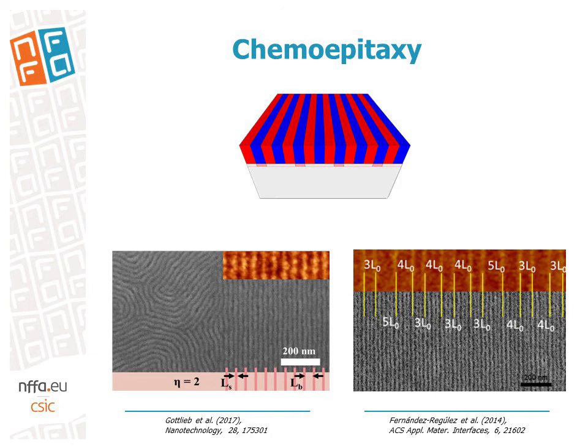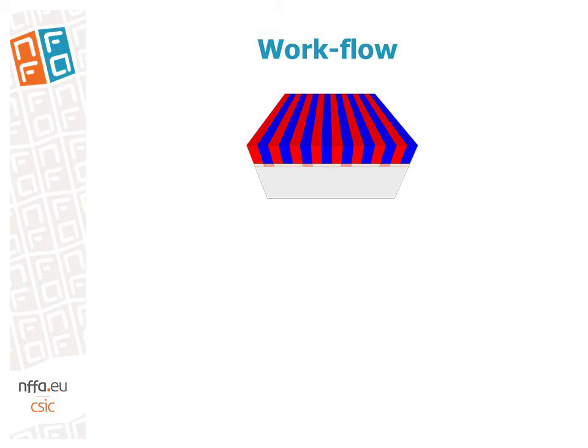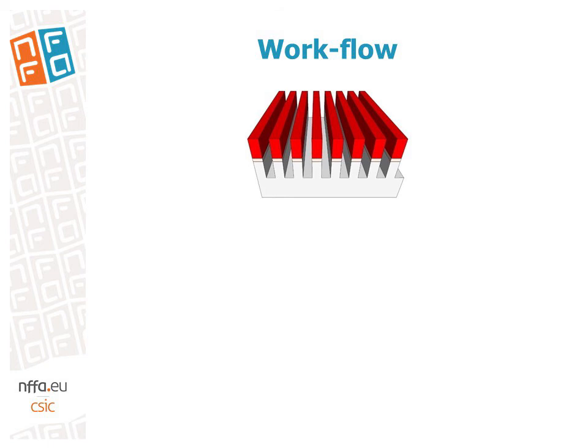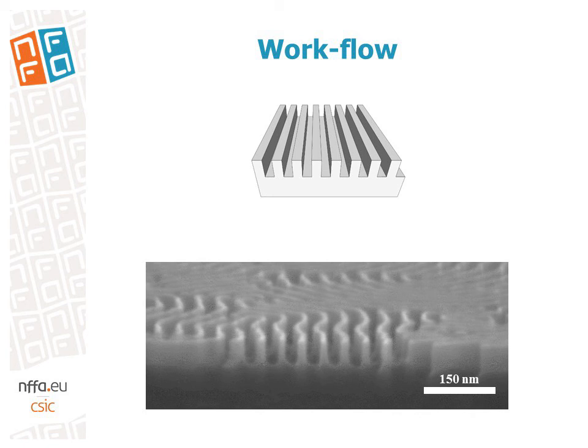In order to do lithography, it is not sufficient to have a large array of oriented block copolymers. To build devices out of these structures, we must first remove one of the blocks. After that, we use a selective dry etching step, where the remaining block serves as an etch mask to protect parts of the substrate against the chemical etching. After removing the etch mask, we have our tiny structures transferred to the substrate and we are ready to fabricate tiny devices.